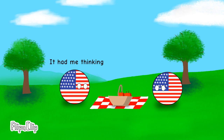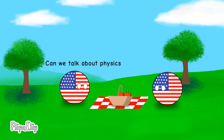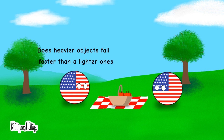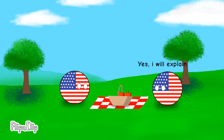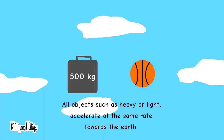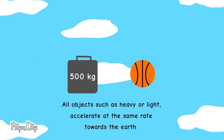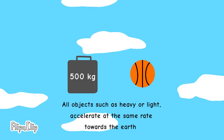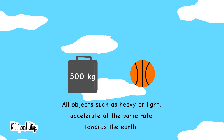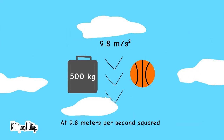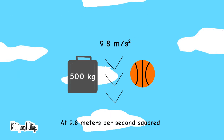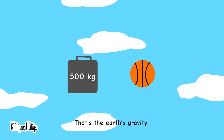Wait, it had me thinking. Can we talk about physics? Does heavier objects fall faster than lighter ones? Yes, I will explain. All objects, whether heavy or light, accelerate at the same rate towards the earth, at 9.8 meters per second squared. That's the earth's gravity.